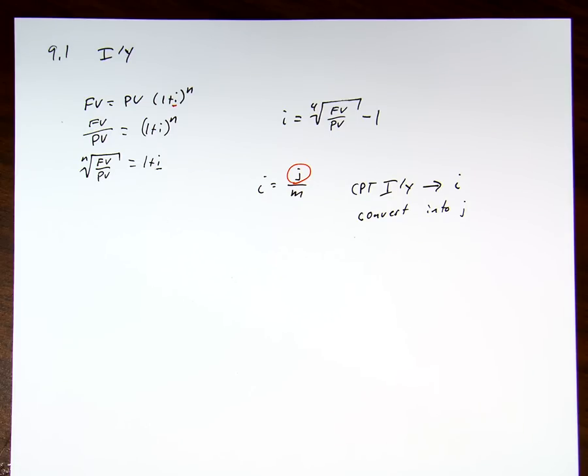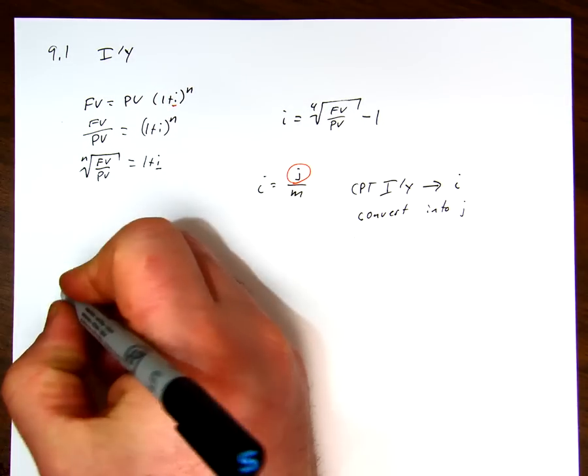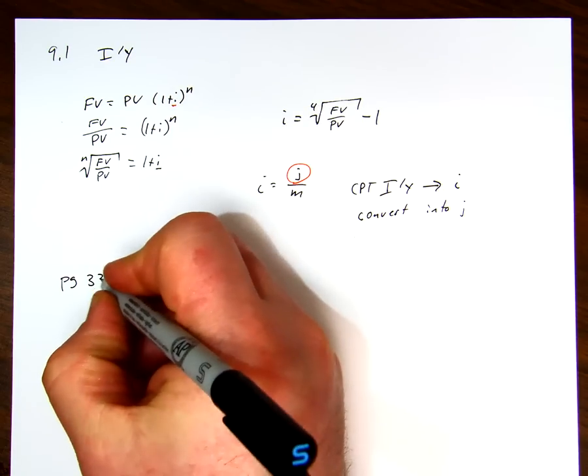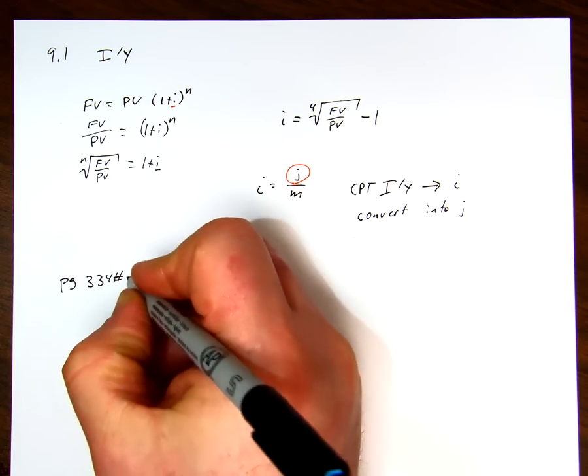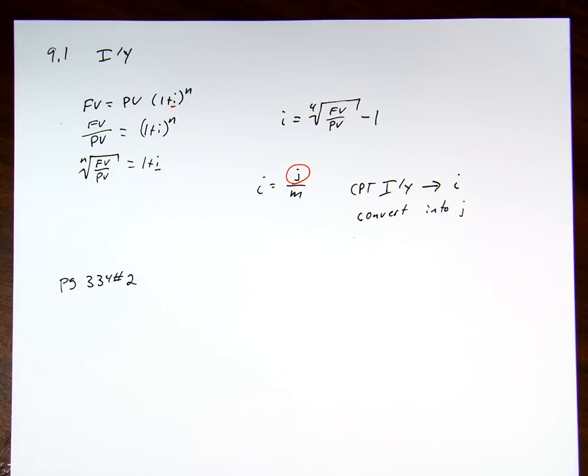So we'll start with a problem. We'll do question 2 on page 334. This problem is fairly simple. It says, what is the annual compounded nominal rate of growth if the future value of $1,000 after 20 years was $4,016.94?